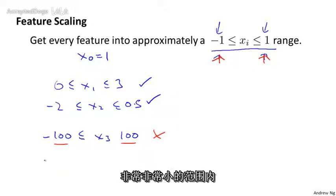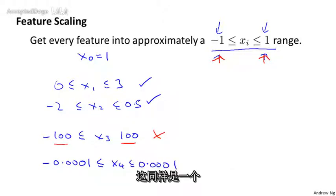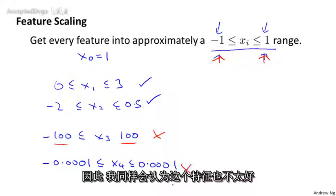...if x4 takes on values between -0.0001 and +0.0001, then again, this takes on a much smaller range of values than the -1 to +1 range. And again, I would consider this feature poorly scaled.